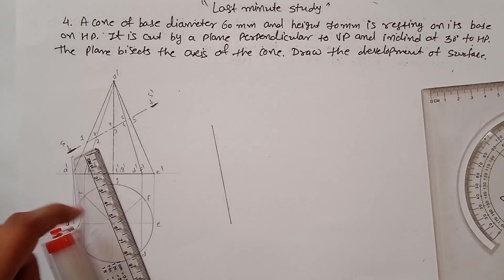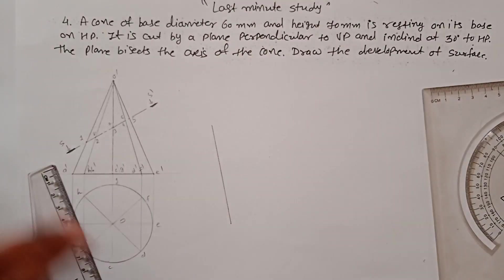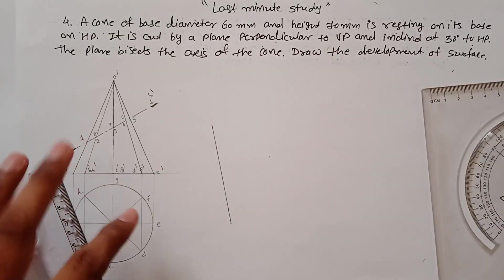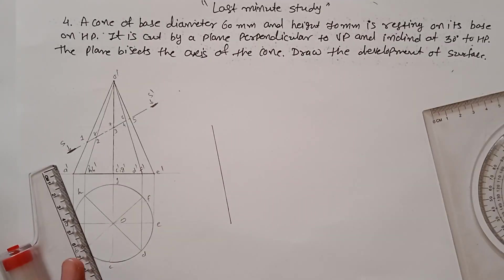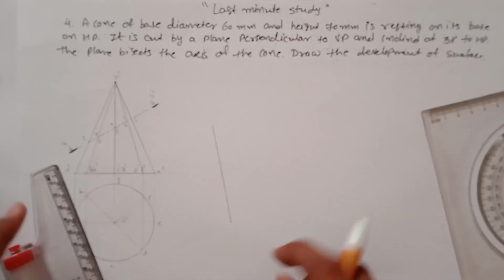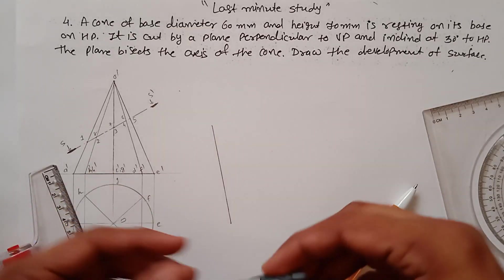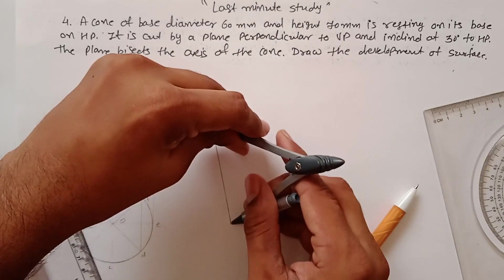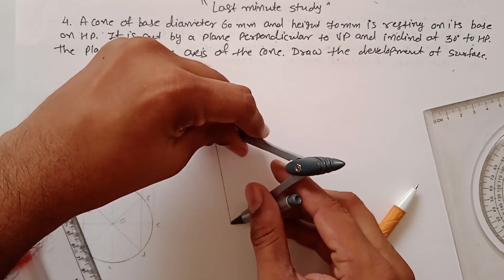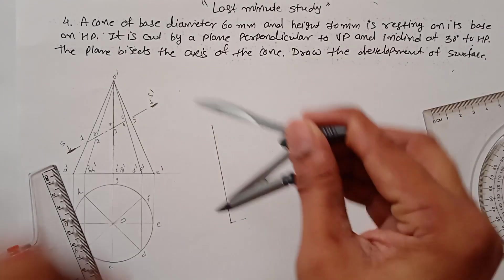The length of this line is 75mm. You can draw the development directly on this line and transfer all the points there, but I will draw it separately for clarity due to space constraints. Then draw not a whole circle but just an arc using this length as the radius.